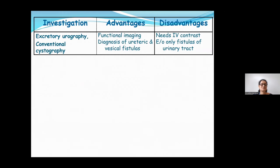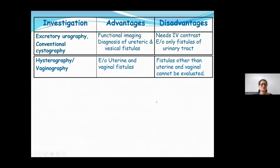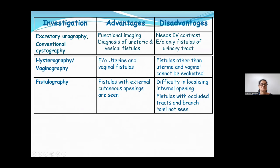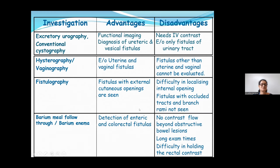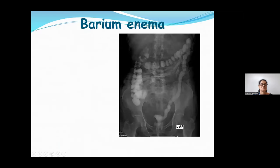Historically, IVUs, cystographies, hysterosalpingographies, vaginographies, fistulographies for cutaneous openings, and barium meal follow-through or barium enemas were used. These still have a role in few cases, but they have one severe limitation: you cannot visualize any fistula beyond the system being examined, and there is a lack of mural and extraluminal visualization. For that, cross-sectional imaging is needed.